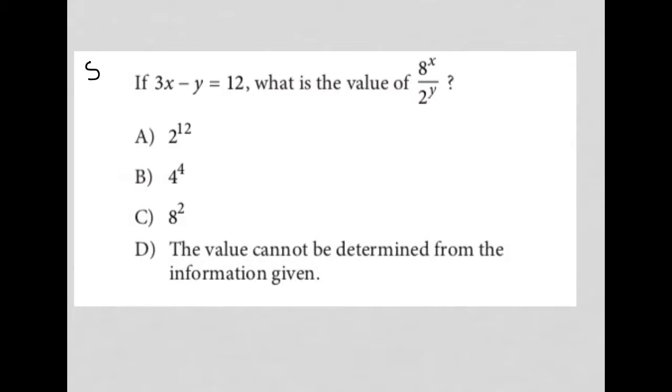So what can I simplify here? 3x minus y equals 12, I can't really simplify that. I could isolate y or I could isolate x if I wanted, but I don't know whether I should do that or not. And also, looking at the answer choices, everything is a term to an exponent, which really points my attention here. So is there a way to simplify 8 to the x over 2 to the y?